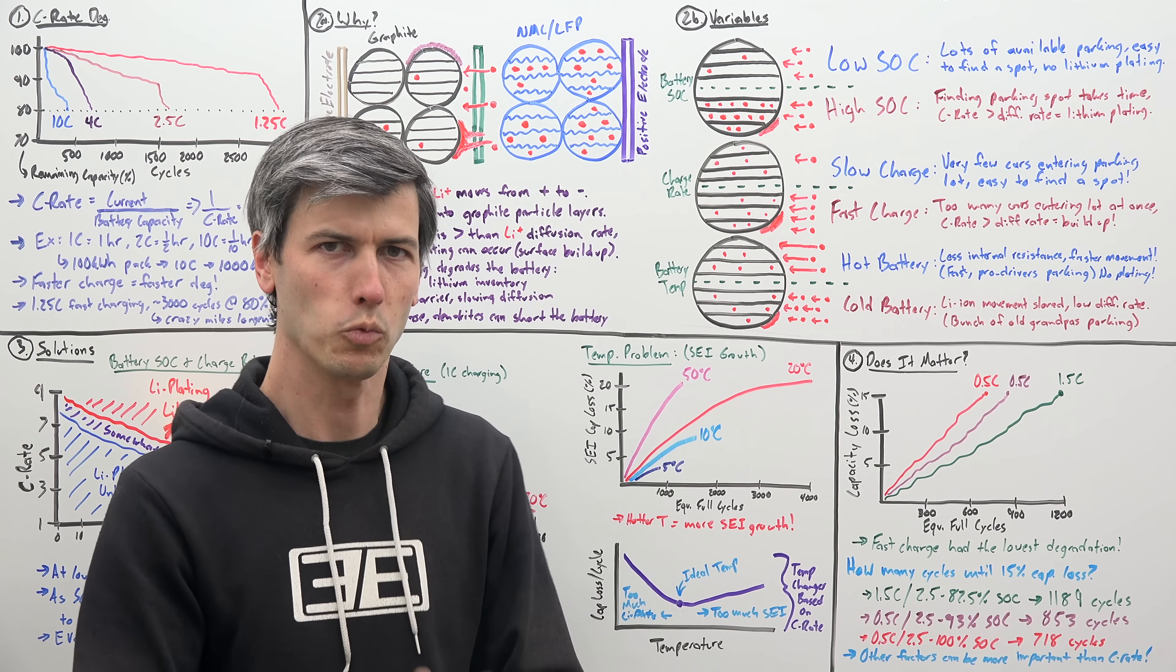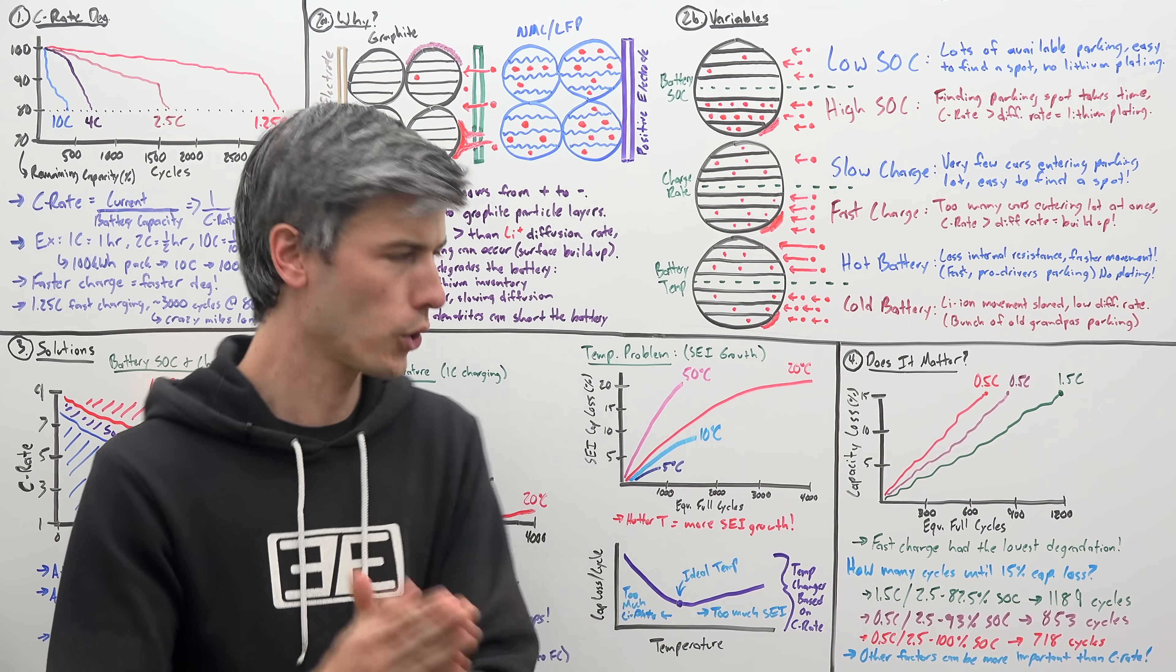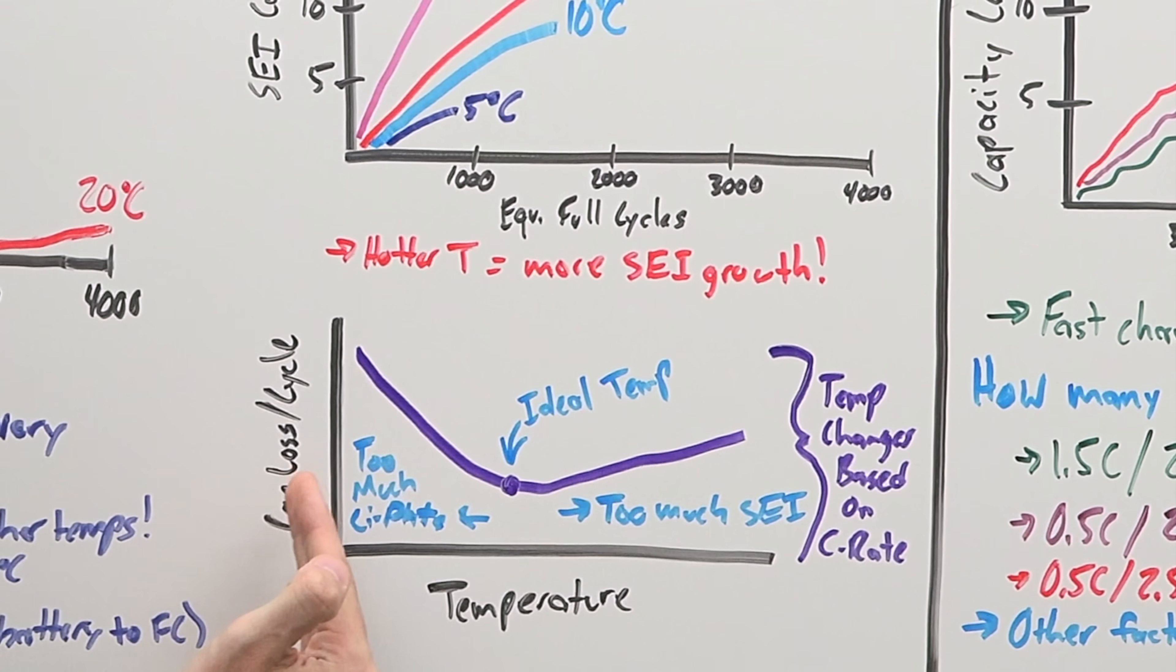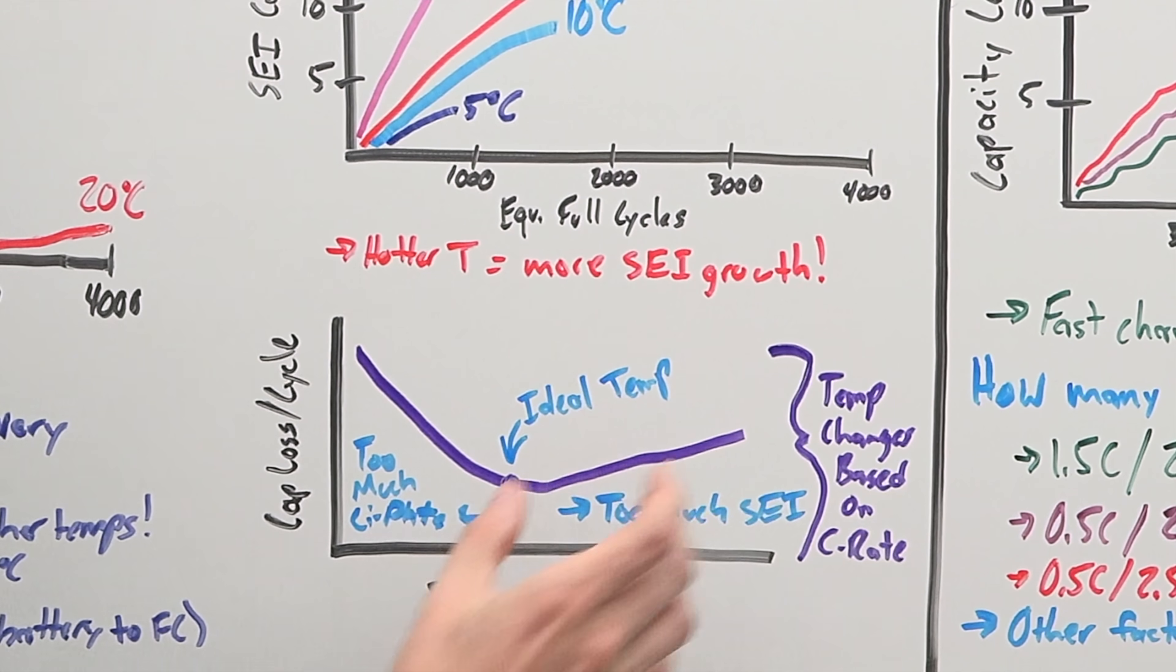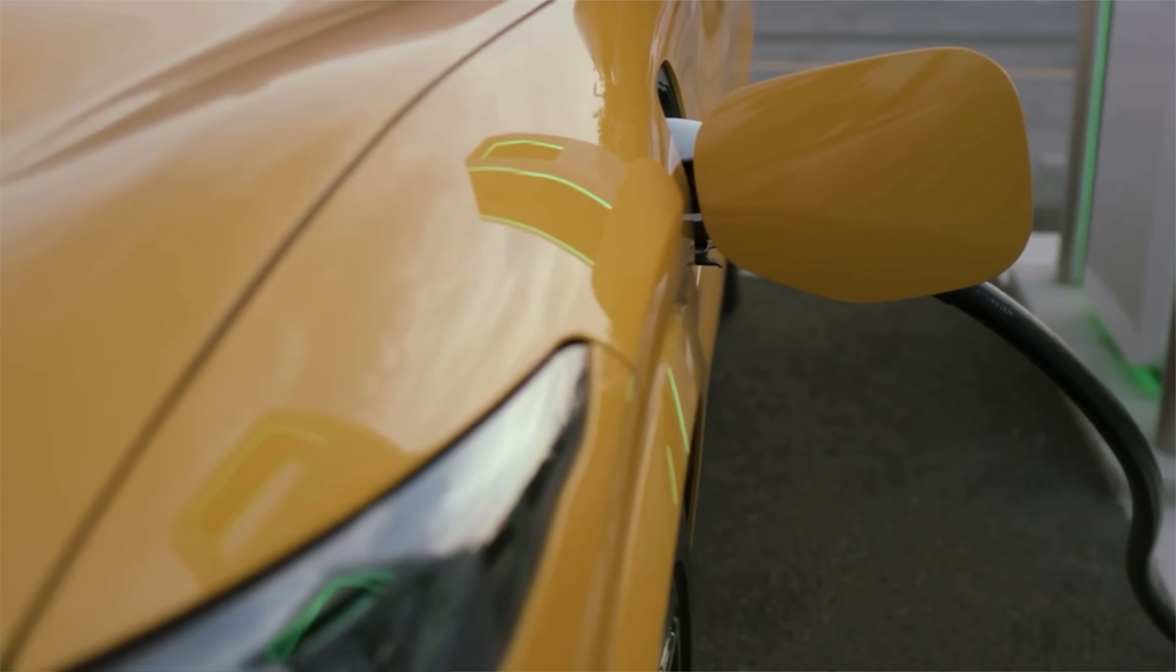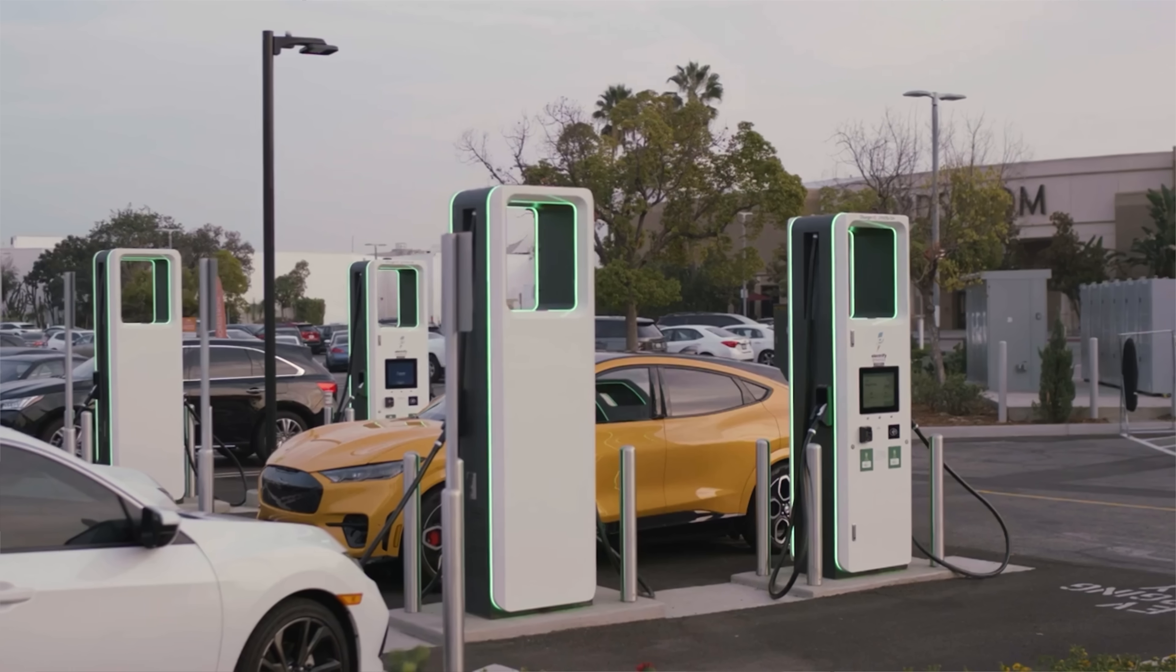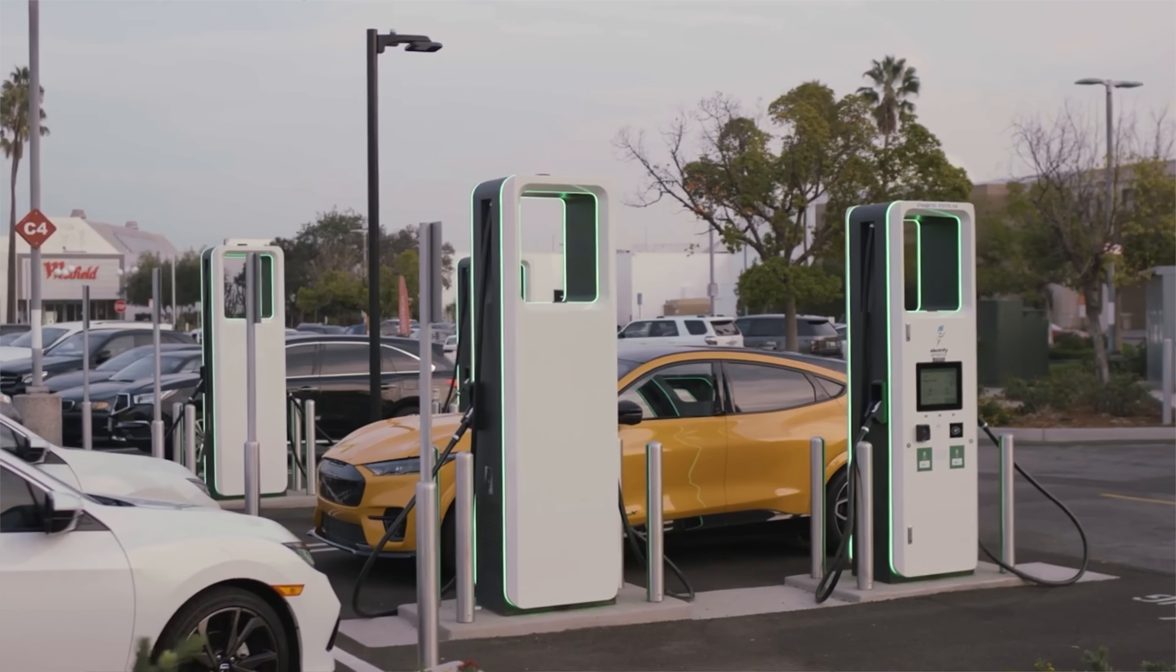So what's the solution? Well, you need to find a happy middle ground. So for any specific charging rate, there's going to be a curve where if you go too cold in temperature, you're going to have too much lithium plating. And if you go too hot in temperature, you're going to have too much SEI formation. So there's going to be this bottom point, this ideal temperature for any given charge rate. And so in the ideal world, while your vehicle is fast charging, it's maintaining the ideal temperature for the battery pack in order to minimize degradation.